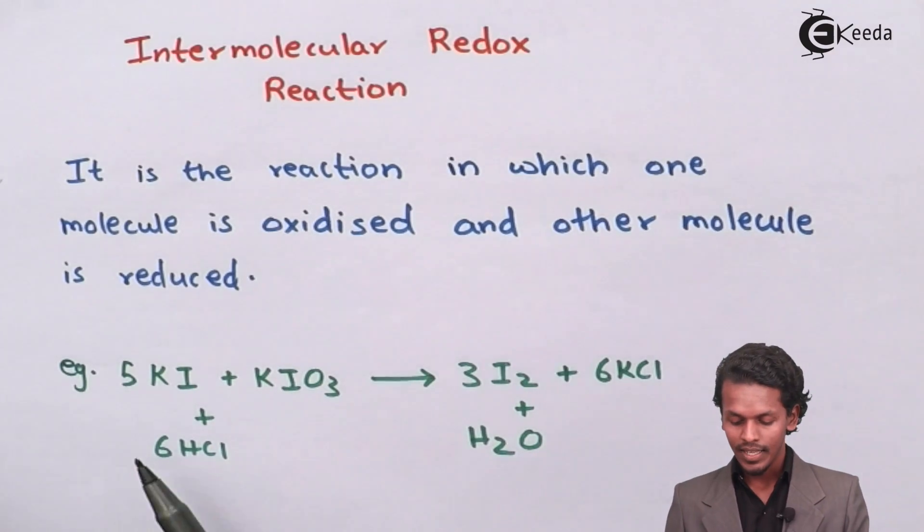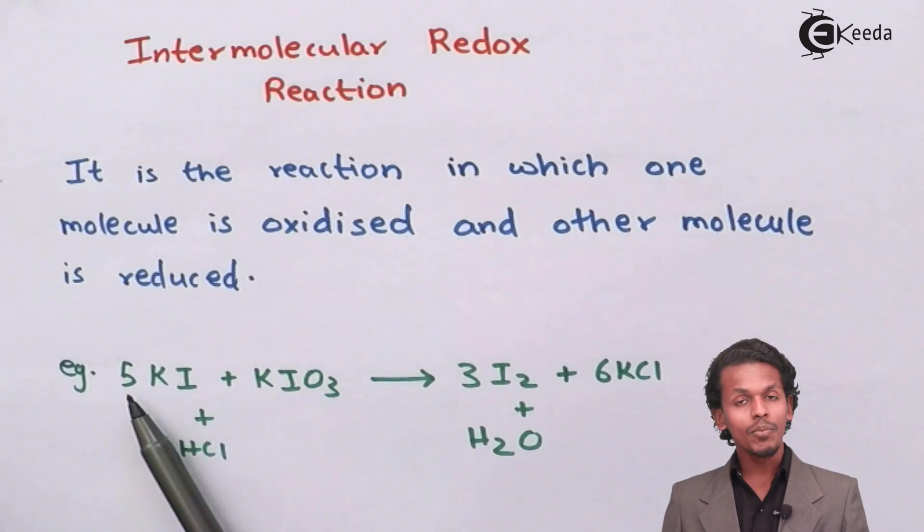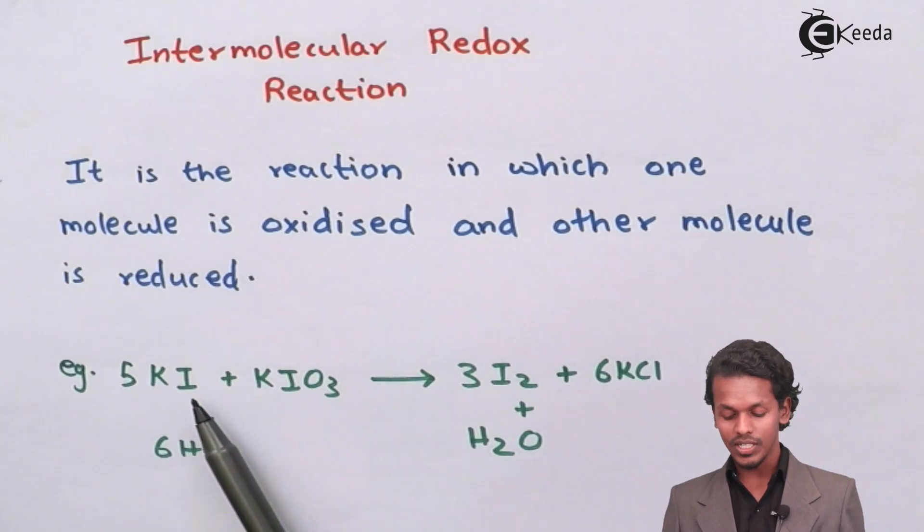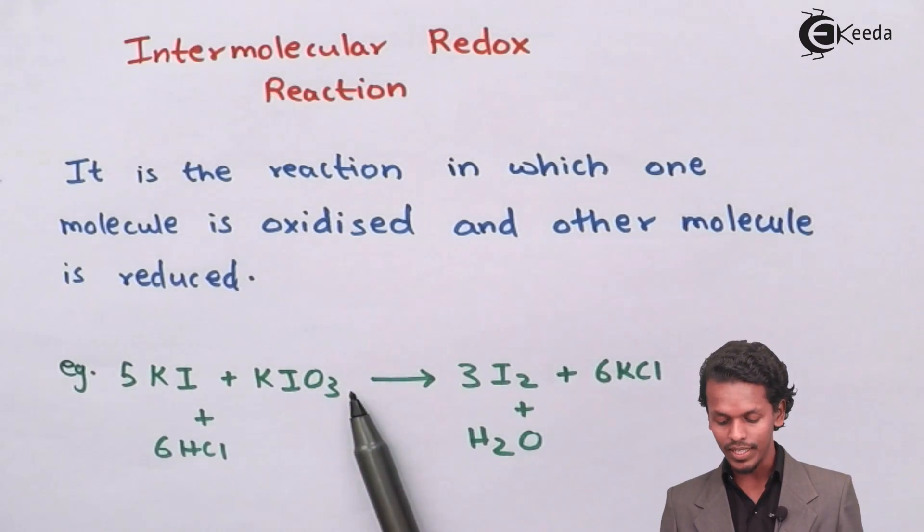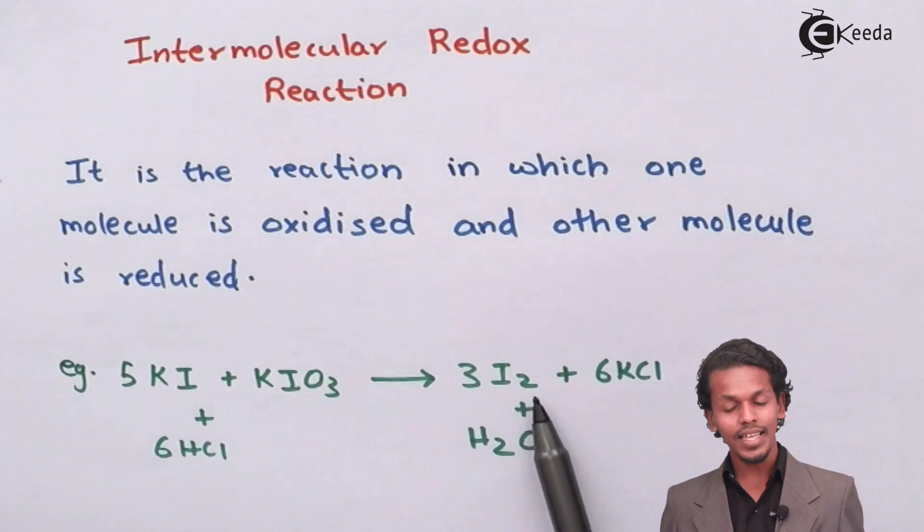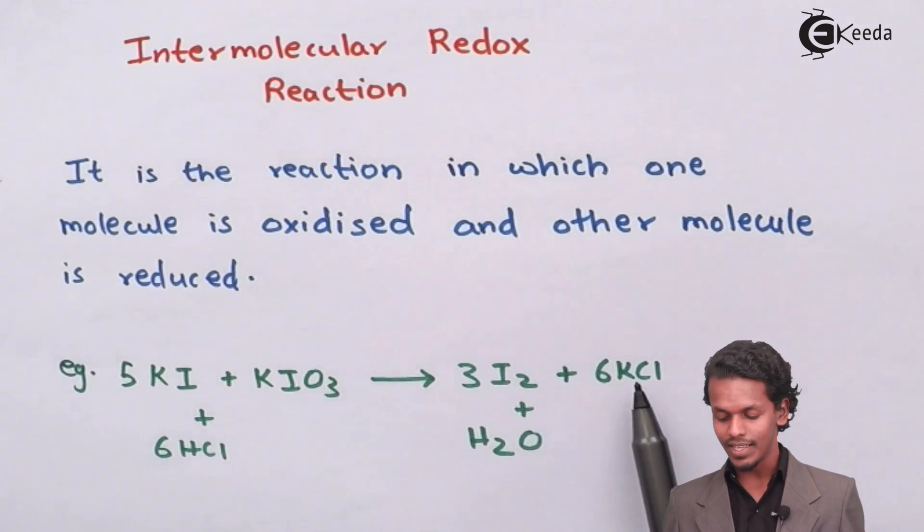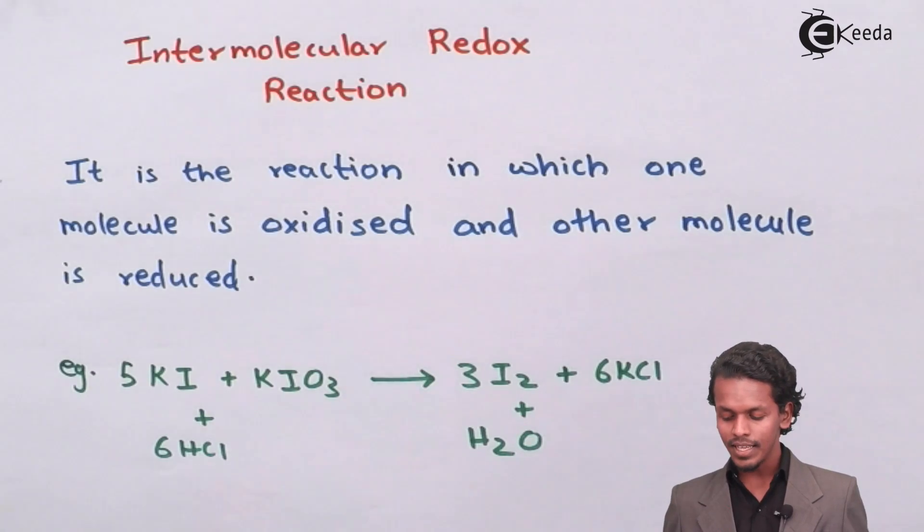In a reaction where five moles of KI, that is potassium iodide, is treated with KIO3 plus six times HCl gives you 3I2 plus six times KCl plus H2O.